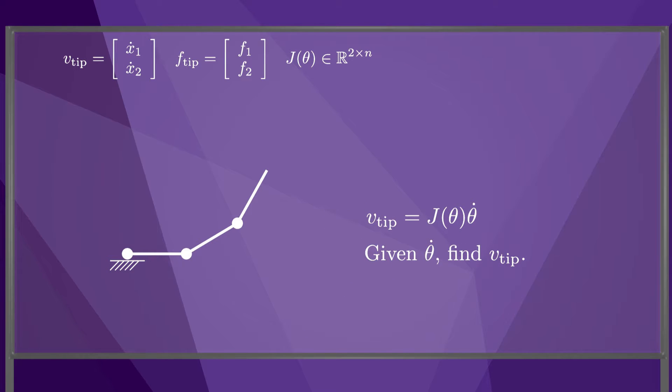Using the fact that v-tip equals j theta dot, we can always calculate v-tip given the joint velocities theta dot. This figure shows the components of the endpoint velocity caused by the individual joint velocities, and we can sum them to get the end-effector velocity v-tip. Since the rank of j is 2, any v-tip can be created by the joints.